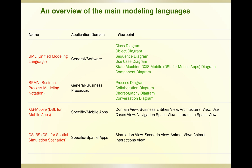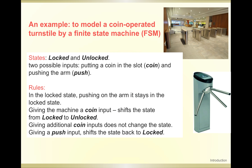Besides UML, there are other modeling languages. BPMN — Business Process Modeling Notation — is mainly used in business process modeling. There is also a mobile-specific language used mainly in mobile applications, and DSL — Domain-Specific Language — which is mainly used for specific simulation scenarios.